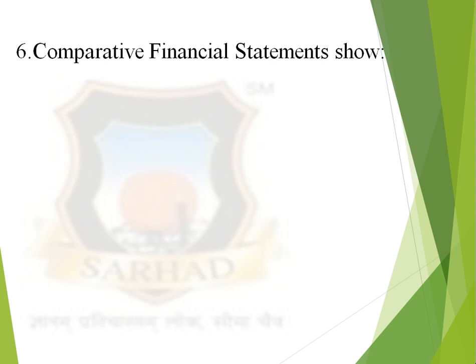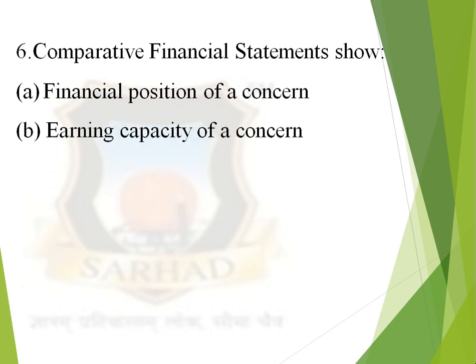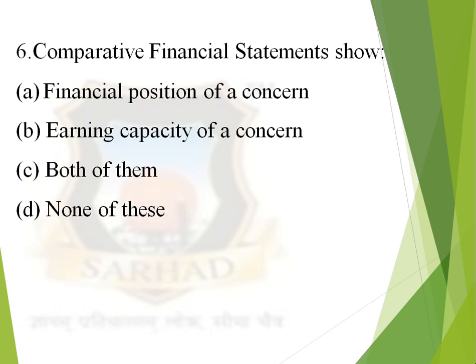Next question: comparative financial statements show — first option, financial position of a concern; second option, earning capacity of a concern; third option, both of them; and fourth option, none of these. The correct answer is both of them.